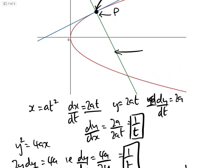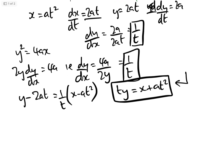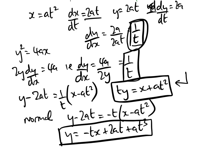Now we can work out the equation of the normal. Since the tangent has gradient 1/t, the normal has gradient −t. So the normal is y − 2at = −t(x − at²), which gives y = −tx + 2at + at³. That is the equation of the normal.